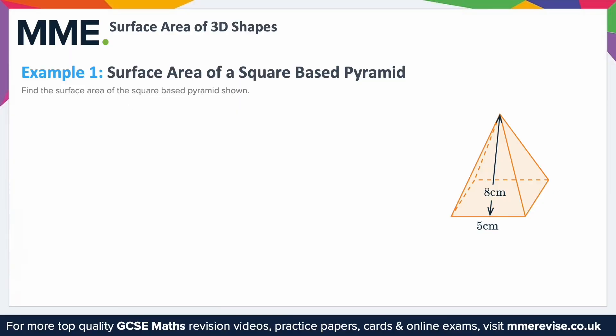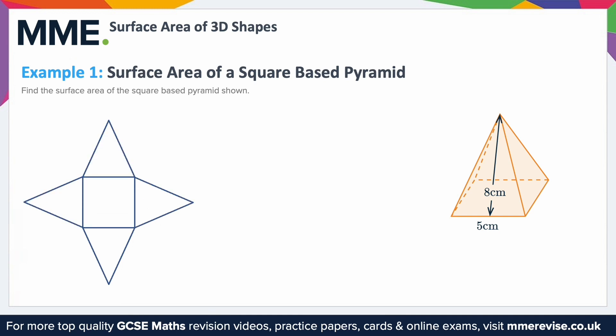Example one: surface area of a square-based pyramid. Find the surface area of the square-based pyramid shown. It's going to be useful to think about the net of the shape — if you were doing origami and wanted to make a square-based pyramid, this is the shape you would cut out of the paper and fold up to make the 3D shape.